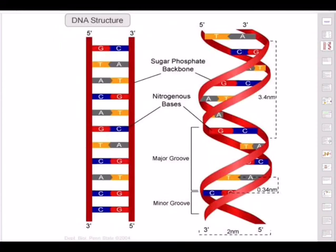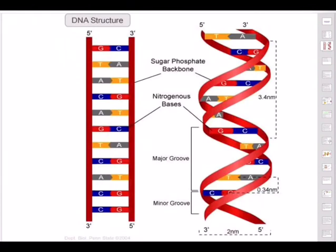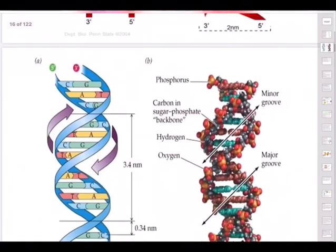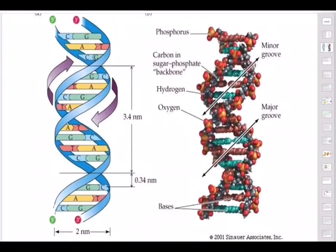Inside the cell DNA looks like a ladder: 5' to 3' on one side and 3' to 5' on the other, with nitrogenous bases on the inside. Sugar-phosphate forms the vertical backbone strands and the nitrogenous bases form the horizontal rungs. When this ladder gets energized it becomes twisted into the double helix with a major groove and a minor groove.